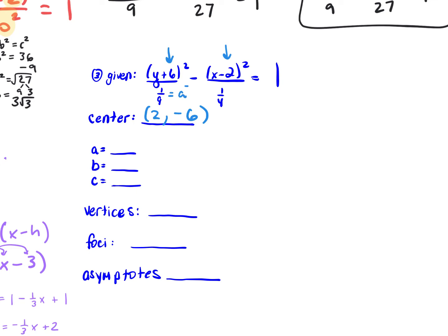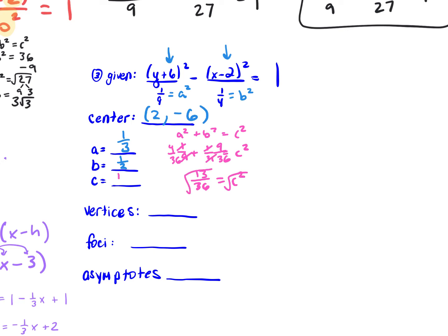The first term is always my a squared. If a squared is 1/9, then a is 1/3. The second term is b squared; b squared is 1/4, so b is 1/2. Using the Pythagorean theorem, a squared plus b squared equals c squared: 1/9 plus 1/4 equals c squared. Finding common denominators — 4/36 plus 9/36 equals 13/36. So c squared is 13/36, and c is square root of 13 over 6.